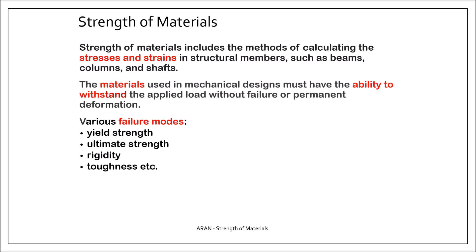What is failure? You can define various failure modes. For example, you can take a material as failed when the yield strength is exceeded — that means your mechanical design begins to deform permanently. Or you can take the ultimate strength as a criteria, meaning failure when rupture occurs. Or you can take rigidity or toughness as a failure mode.